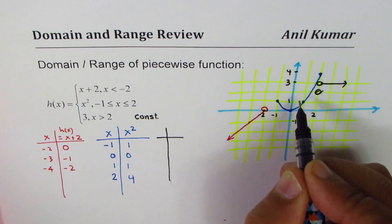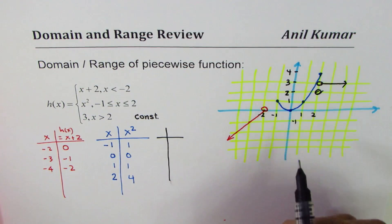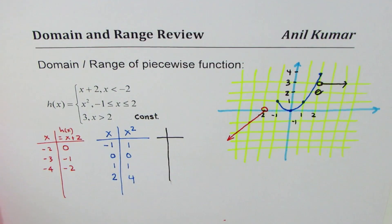So that is how you get your piecewise function. Once you sketch a piecewise function, it becomes kind of simpler to write domain and range.